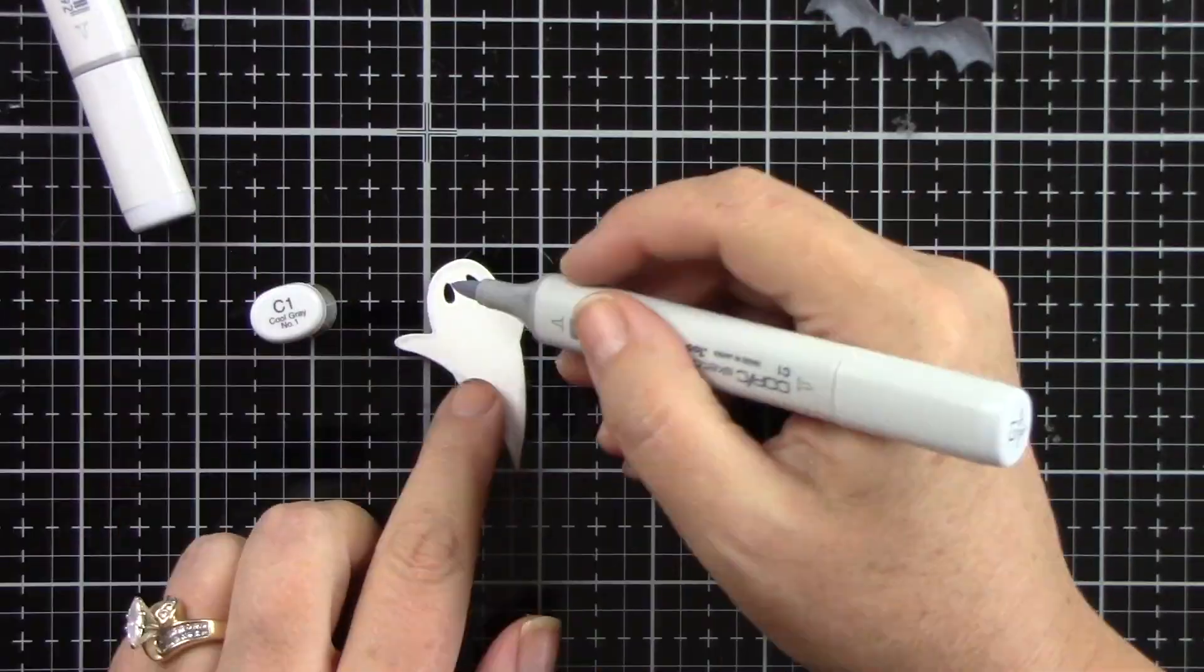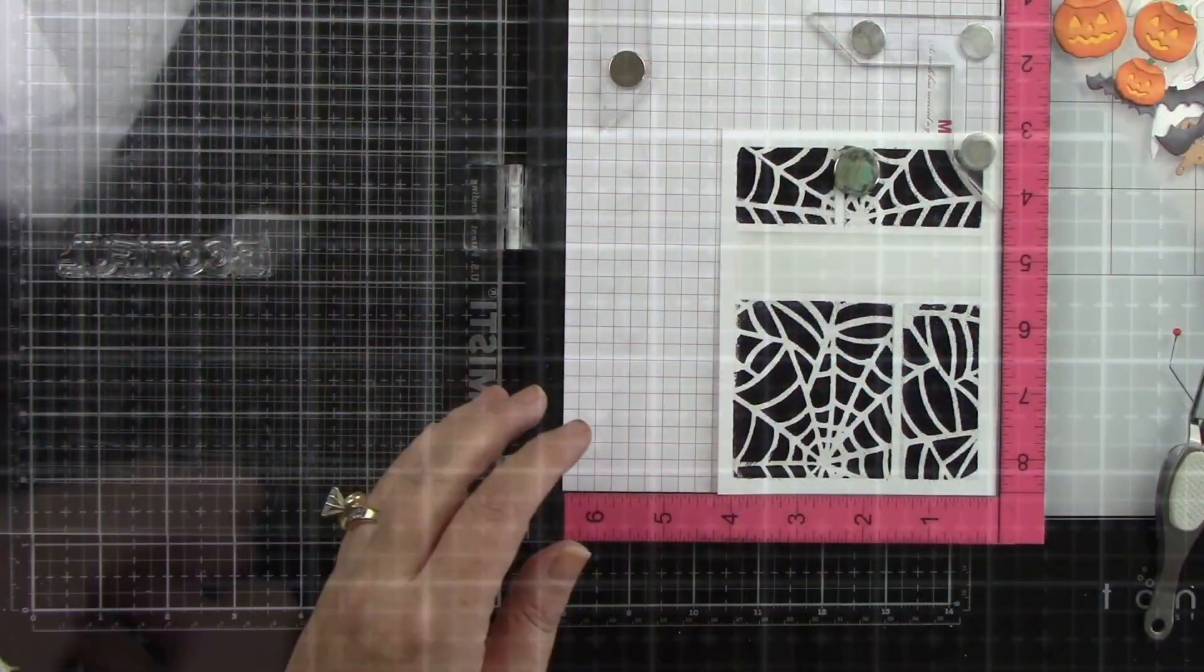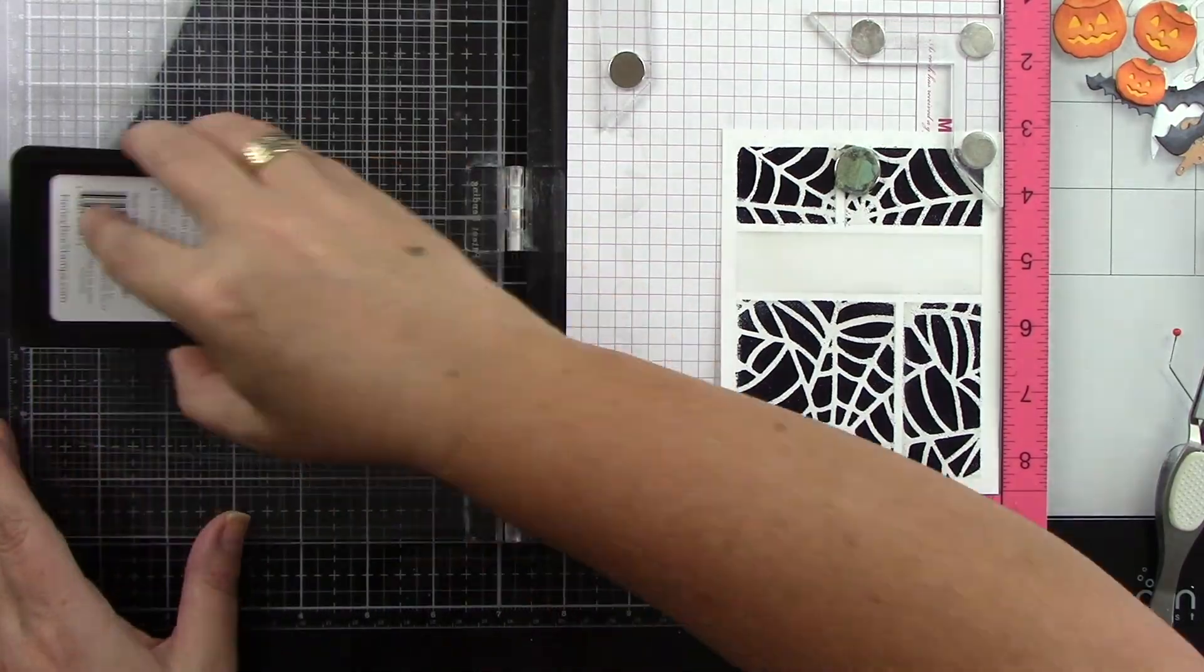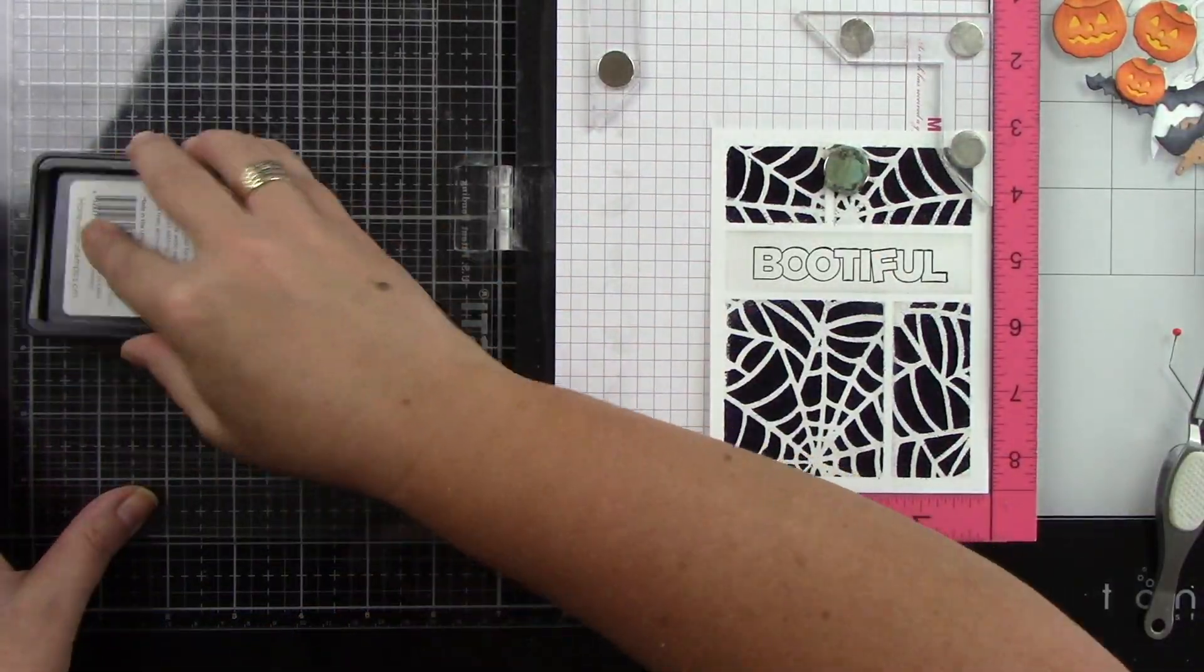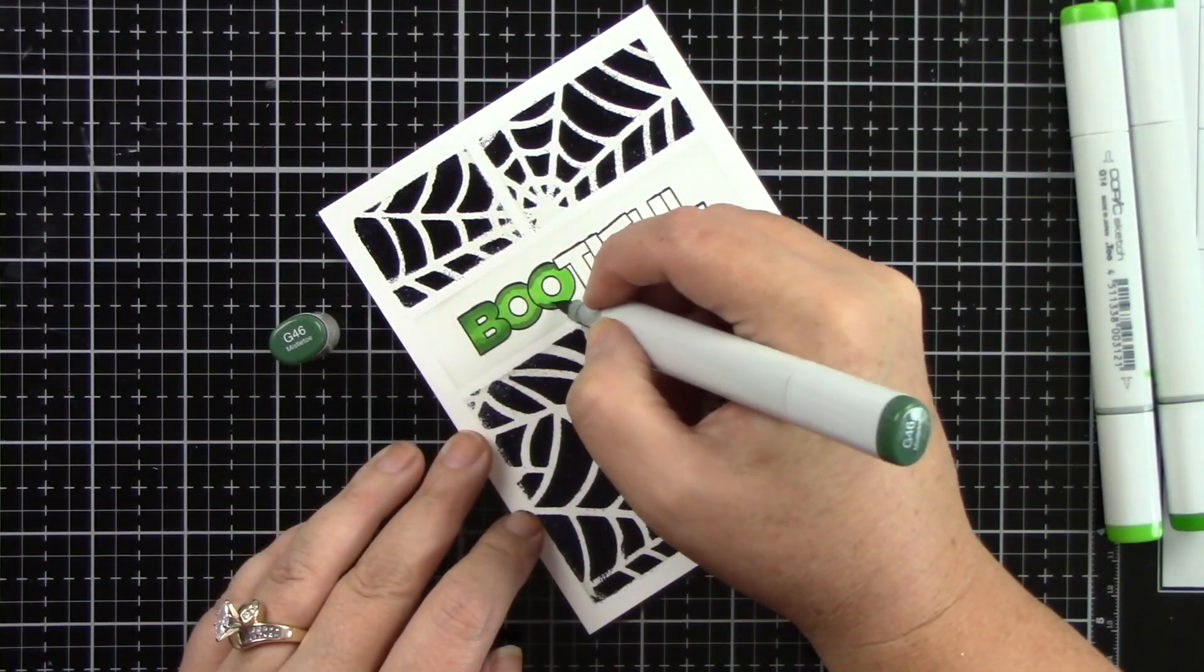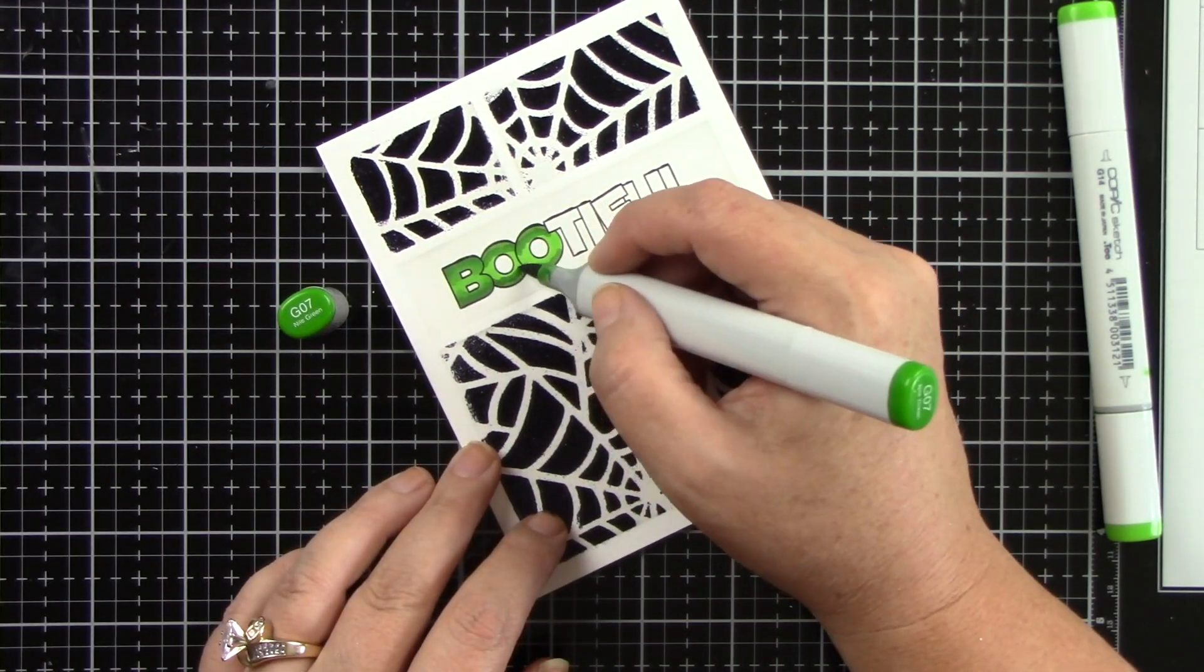For the cute ghosts, I'm using C2 and C1. I kind of wanted him to look a little bit dingy, so that's why I also used the C2. Now ignore this background. I had a different background that I started off with, and I didn't love it. It didn't work well, but I am going to use the sentiment, so that's why I kept it in the video. So I stamped the sentiment with black ink. This is from Simon Says Stamps Halloween People Stamp.